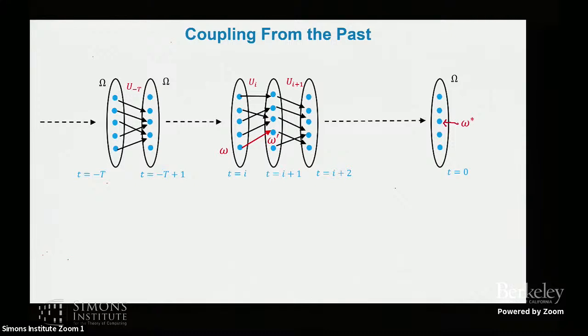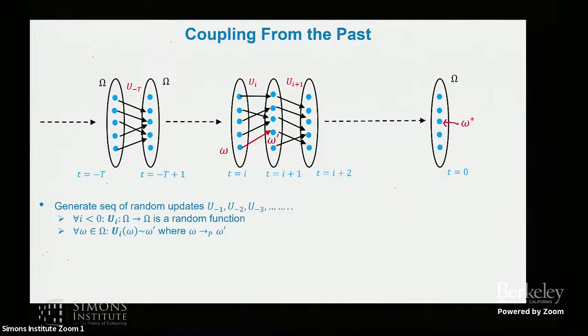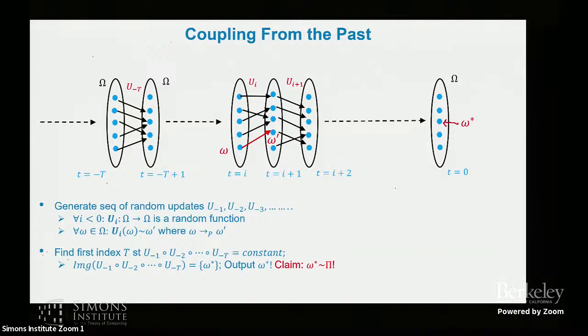So let's try to understand better what they are trying to say. They are generating these random updates, these random U's, such that each U_i, if you look at marginally, if you look at any state like I have highlighted the state omega to the transition omega prime, it looks like the Markov chain P is being followed. That is the first requirement you need to satisfy. And then basically you want to find the first index, like let's say minus T in this case, such that this composed function is a constant. And it should be clear that this is enough, because if I know the image of U minus T composed all the way to U minus one is a constant, that is omega star, it doesn't matter what has happened previously in time. It's as if I found a shortcut to run all the minus infinity to zero steps. So this is the basic idea.